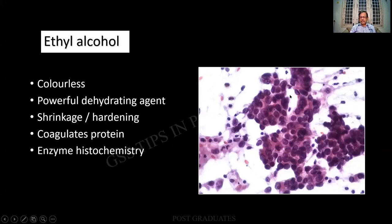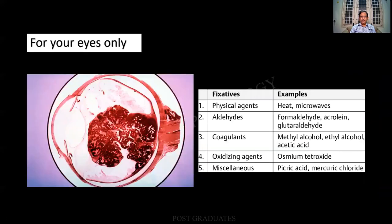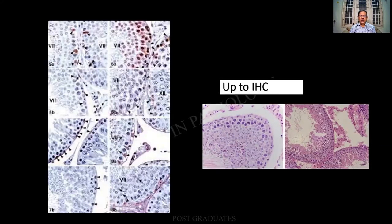Alcohol — ethyl alcohol by itself is colorless and powerful, dehydrating. It can cause shrinkage, but the main thing it causes is coagulation of the protein, and enzyme histochemistry can be nullified. Look at the fixation here — there is a preservation of the cell clusters, nucleus, and the cytoplasm. There are different types of tissues for which different fixatives can be used. I hope you people are able to recognize the eyeball here with a tumor arising from the retina — obviously a retinoblastoma, even though I had a doubt of melanoma, but melanoma will be more common in the choroid.